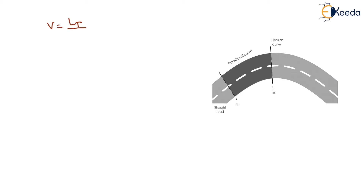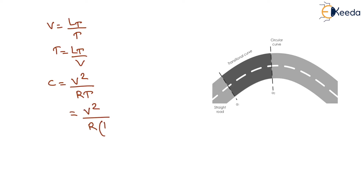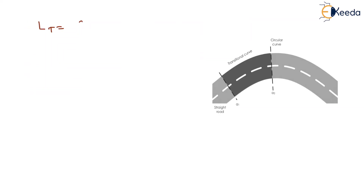Since speed = distance / time, we have v = LT / T, so T = LT / v. Substituting into C = v²/(R·T) gives C = v²·v / (R·LT) = v³/(R·LT). Solving for LT gives LT = v³/(C·R). Since v is in km/h, converting to meters gives the final formula: LT = 0.278·v³ / (C·R).